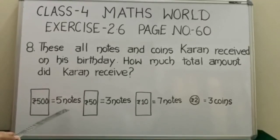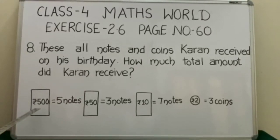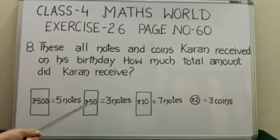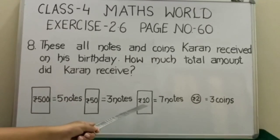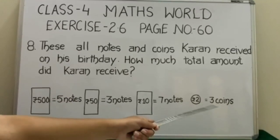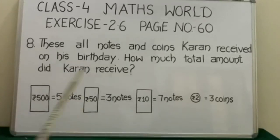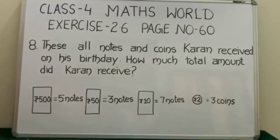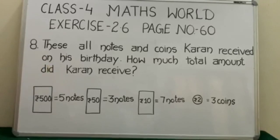He got 5 notes of Rs. 500, 3 notes of Rs. 50, 7 notes of Rs. 10, and 3 coins of Rs. 2. Now let us count the total amount Karan received.